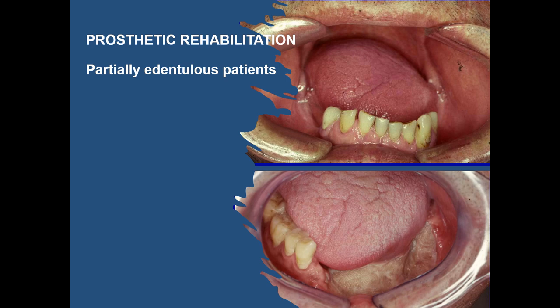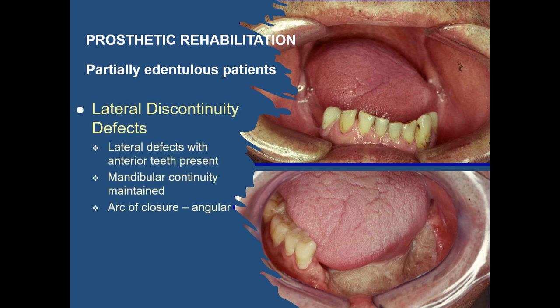Partially edentulous patients with lateral resections where anterior teeth are still present form one category. When fabricating a removable prosthesis, occlusal rests direct occlusal forces along the long axis of the teeth, guiding planes enhance stability and bracing, and retention must be within the limits of physiologic tolerance of the periodontal ligament. Retainers, minor connectors, and proximal plates should be designed so they do not exert excessive lateral forces on the remaining teeth during function.